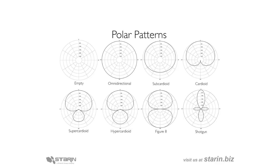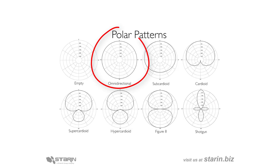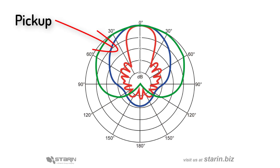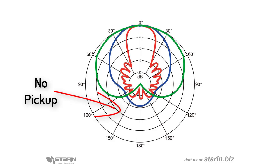The first consideration is the microphone pickup pattern. The key is that the more aggressive the pattern, the more it affects the tonal quality of the sound. So we want to be as close to omnidirectional as is possible. We aren't concerned with the pickup area, but we are concerned with the areas that are not picked up. We simply match those areas with the places we do not want sound heard.